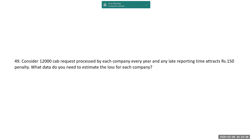Consider 12,000 cab requests processed by each company every year, and any late reporting time attracts Rs. 150 per penalty. What data do you need to estimate the losses for efficiency? You need to know the significance level at which you want to find out, and the number of cab requests that are in default. The cost is 150 multiplied by the items — the percentage.